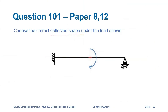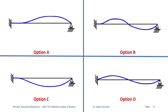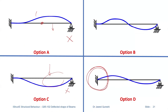Moving to the next question — this is a simpler one. We have to draw the deflected shape under the given loading, where a clockwise moment is applied. It is a propped cantilever beam. When a moment is applied at a certain point, it will always switch sides — it will push one side up and one side down. Options that don't show this switching are wrong. Option D is wrong because at a fixed support there should be no rotation, but rotation theta is shown. This leaves only option B.